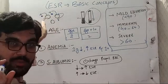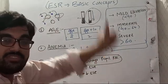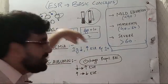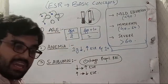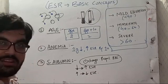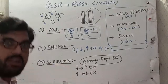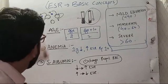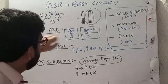Normally RBC repel each other. These are the proteins which neutralize the charges, and after which the RBC become sticky and they stick to one another and then they fall down in the tube.